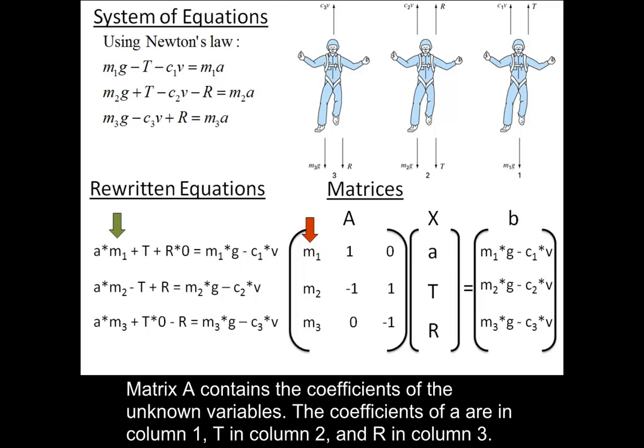Matrix A contains the coefficients of the unknown variables. The coefficients of A are in column 1, T in column 2, and R in column 3.